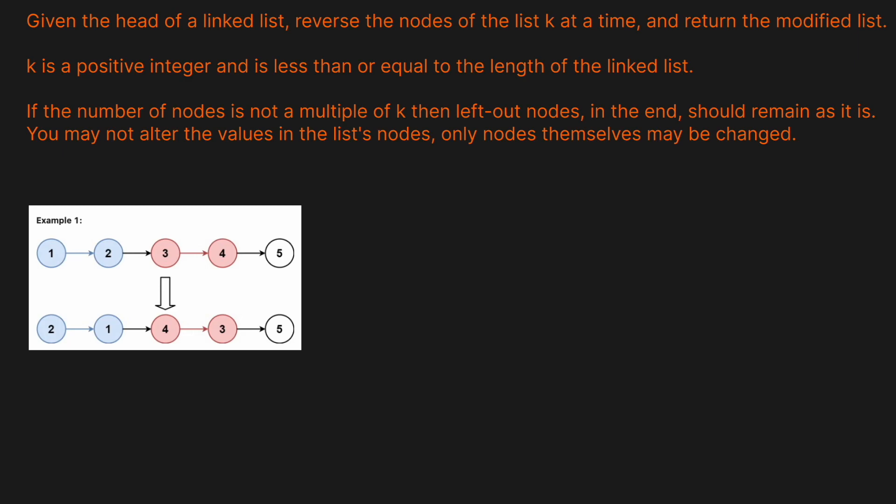Given the head of a linked list, reverse the nodes of the list k at a time and then return the modified list. k is a positive integer and is less than or equal to the length of the linked list. If the number of nodes is not a multiple of k, then the left out nodes at the end should remain as they are. You may not alter the values of the list's nodes — only the nodes themselves may be changed.